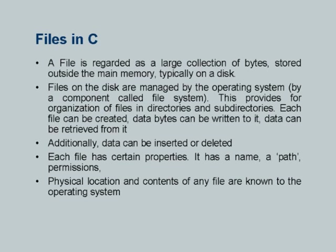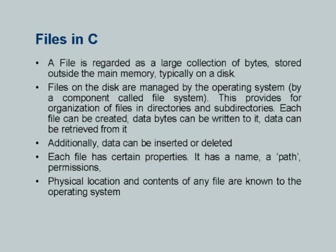So what is a file? A file is regarded as a large collection of bytes stored outside the main memory, typically on a disk — that is as simplistic a definition as can be given. C programming language recognizes files in this simplistic fashion only: it is a collection of bytes. The file ordinarily resides outside memory on a disk; we have not discussed organization of files on disk in this subject so far.